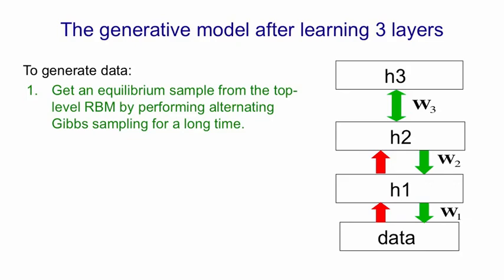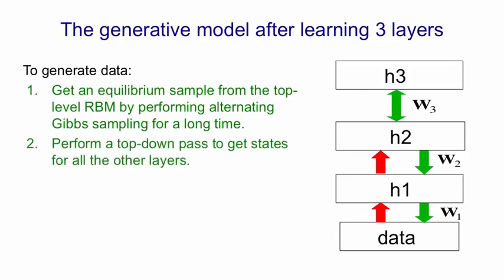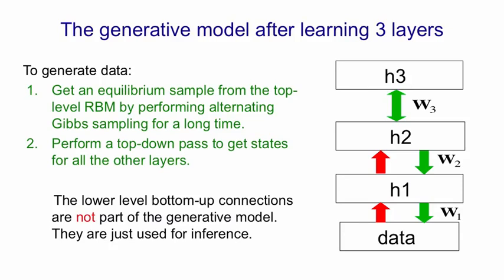The top-level restricted Boltzmann machine is defining the prior distribution over H2. Once you've done that, you simply go once from H2 to H1 using the generative connections W2, and then from whatever binary pattern you get in H1, you go once more to get generated data using the weights W1. So we're performing a top-down pass from H2 to get the states of all the other layers, just like in a sigmoid belief net. The bottom-up connections shown in red at the lower levels are not part of the generative model — they're the transposes of the corresponding weights, the transpose of W1 and the transpose of W2. They're going to be used for inference, but they're not part of the model.